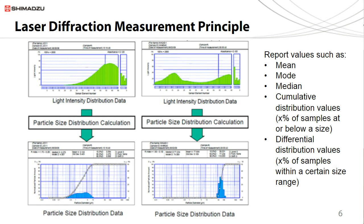This produces a particle size distribution along with values such as mean, median, mode, and cumulative and differential distributions, which are the percentage of particles at or below a certain size and the percentage of particles within a certain size range.